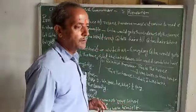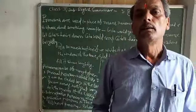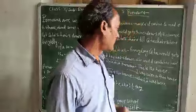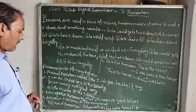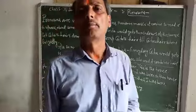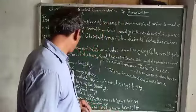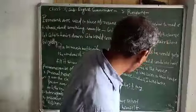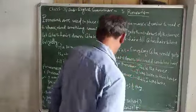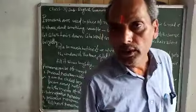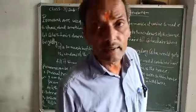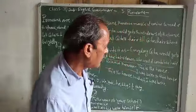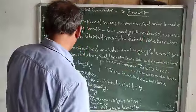The second type is the interrogative pronoun. For example: 'What is the name of your school?' 'Where do you live?' 'What is the name of your country?' Here the word 'what' is an interrogative pronoun.